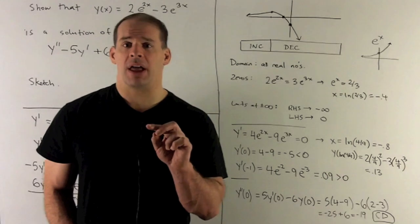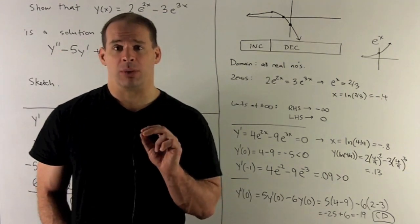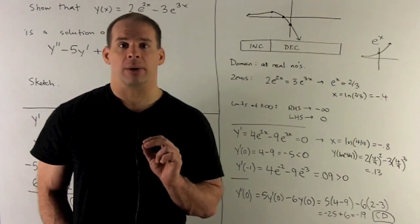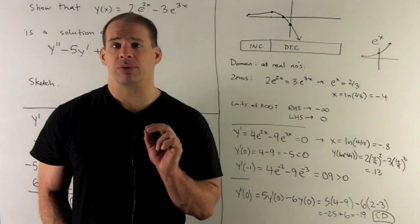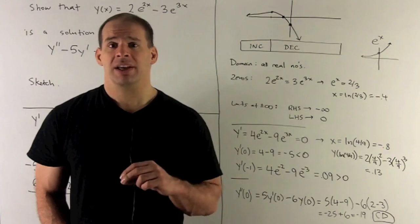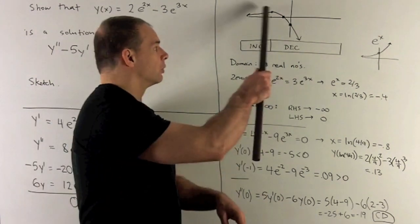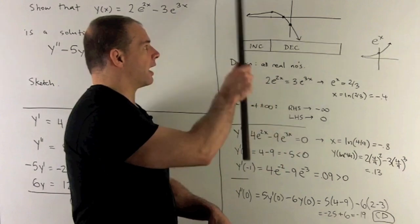So as we go off to plus infinity in x, we take a look at what's happening with the e^(3x) term. e^(3x) goes off to plus infinity, but since there's a -3 out in front, it's going to switch to going to minus infinity, which means we're going to look like this, going down that way.